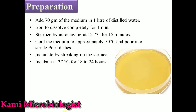Now let's see how to prepare this medium. To prepare this medium, we have to add 70 grams of the medium in one liter of distilled water. After mixing, we have to boil it to dissolve the medium completely for about one minute. After dissolving, we autoclave it at 121 degree Celsius for 15 minutes. After sterilization, the media should be cooled down to approximately 50 degree Celsius, then poured into test tubes if it is broth, or into Petri plates if it is agar.